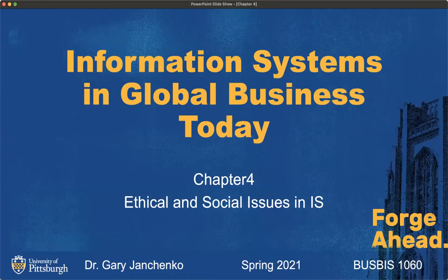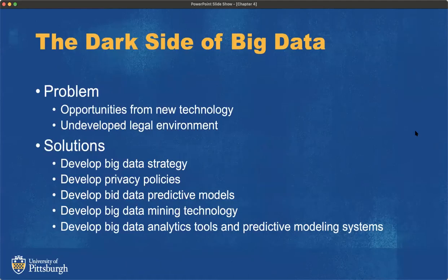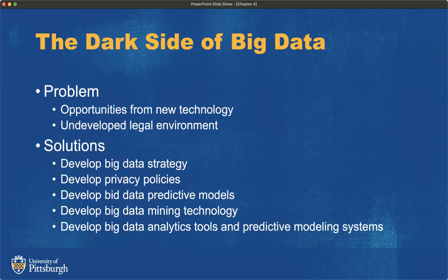All right, everyone. Here in Chapter 4, we're going to be talking about the ethical and social issues in information systems. The first thing we're going to start off with is big data. We've introduced big data in previous chapters, and as companies learn how to harness the power of big data, some problems come with that — not just how do we deal with, store, and analyze big data, but also the problems associated with mining that data. We have some problems with the opportunities associated with new technology, but more specifically in this chapter, it's the underdeveloped legal environment.